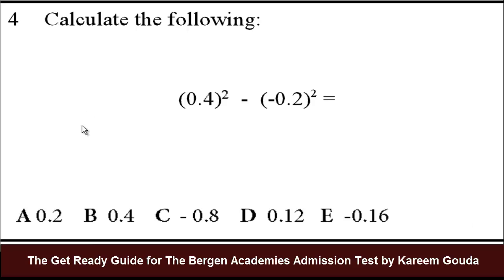Question number 4, page 149. Calculate the following: 0.4 squared minus negative 0.2 squared.